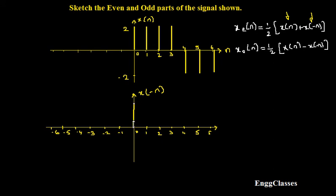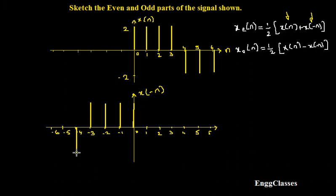At the zeroth position, the sample has amplitude 2. At position 1 it was something; now at minus 1 it appears there. At position 2 the amplitude is 2, and at minus 2 the amplitude is still 2. At position 3 the amplitude is 2, which now becomes the value at minus 3. At position 4 the amplitude is minus 2, so at minus 4 the amplitude is also minus 2. Similarly, the sample at 5 appears at minus 5, and the sample at 6 appears at minus 6.